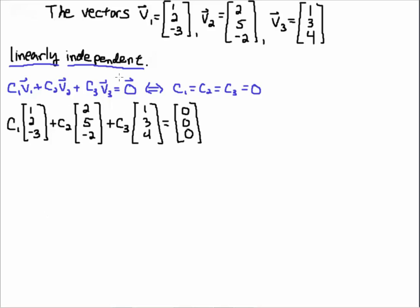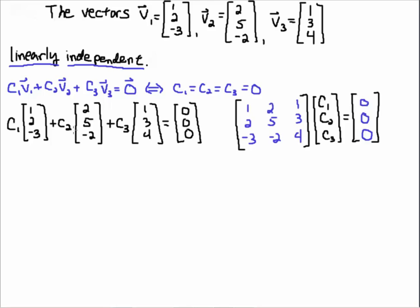Well, let's set up the definition. So here we have C1 times V1 — that's this vector here, 1, 2, minus 3 — plus C2 V2 plus C3 V3 equal to the zero vector. So I've just written the definition. The linear combination here is set equal to zero. Now I can write this linear combination as a linear system.